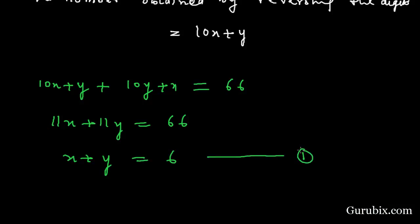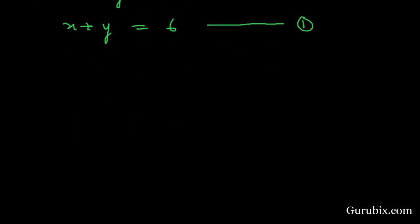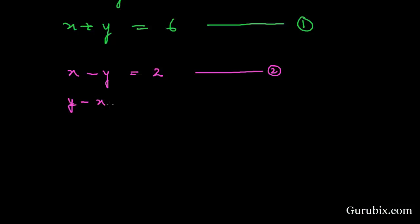We are also given that the digits of the number differ by 2. There can be two conditions. If X is greater than Y — that is, the unit digit is greater than the tens digit — then X minus Y equals 2. This is equation number 2. It may also be that Y is greater than X — that is, the tens digit is greater than the unit digit — then Y minus X equals 2. This is equation number 3.